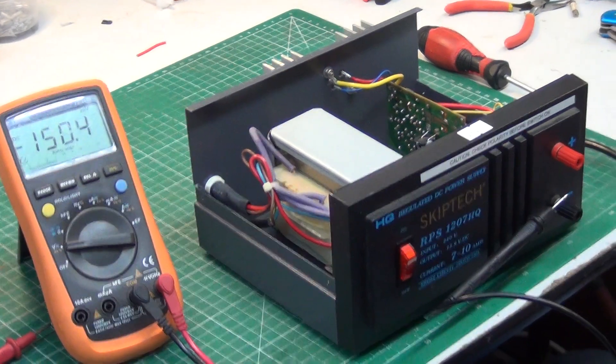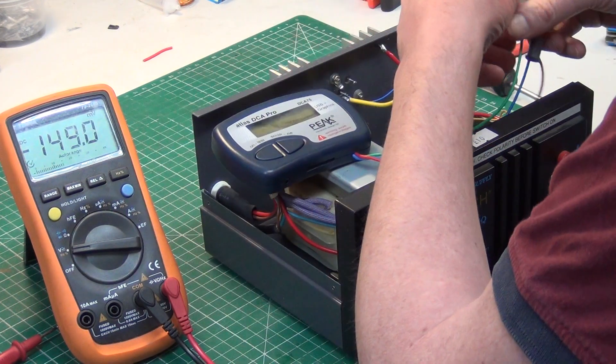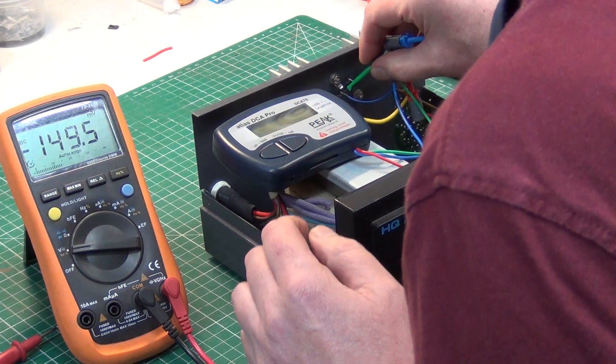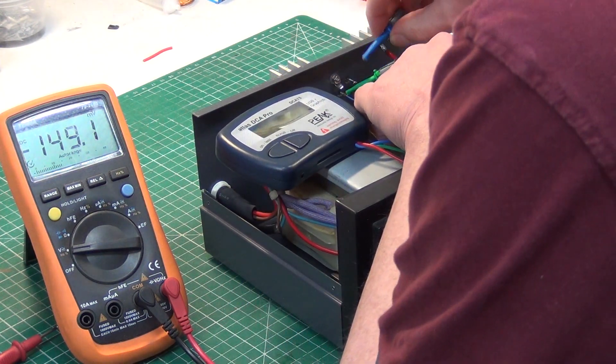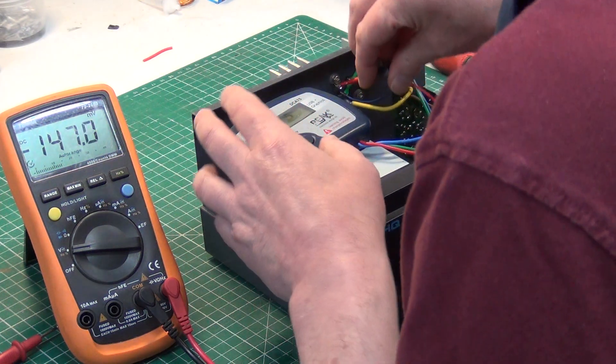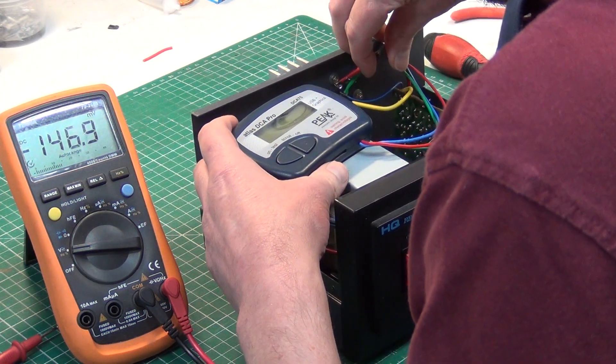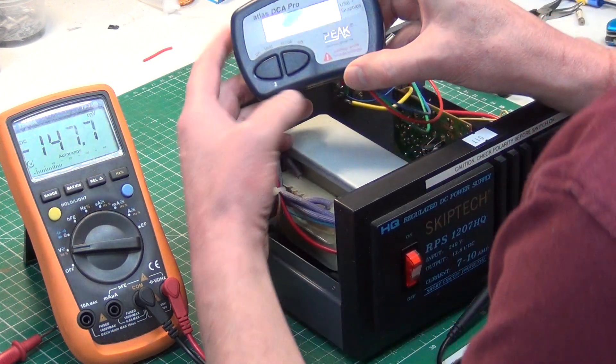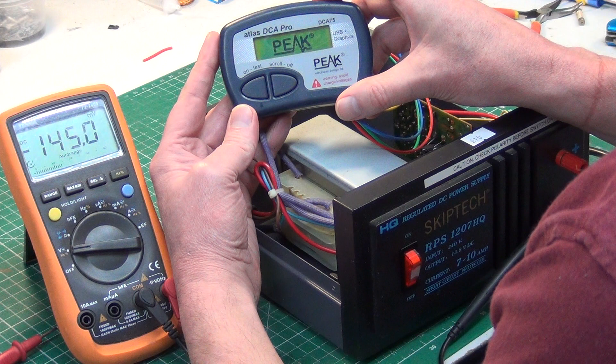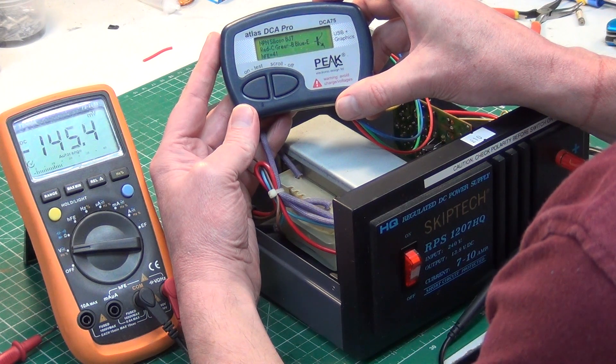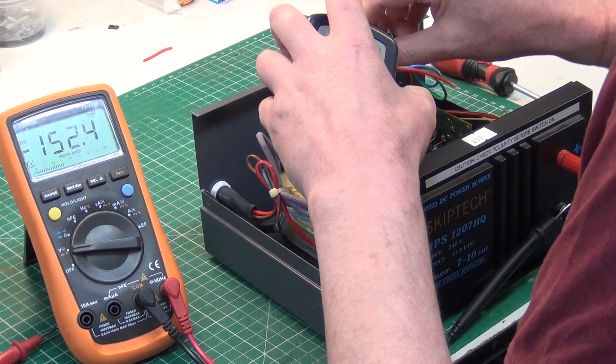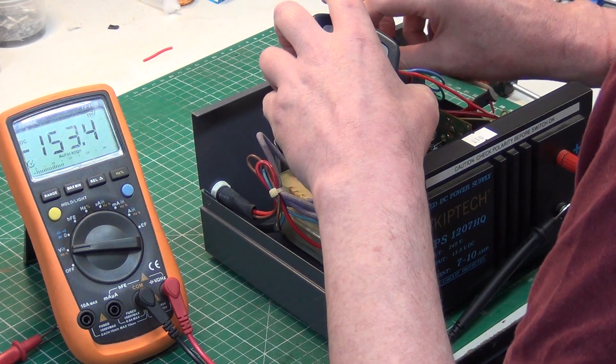Pause the video. Right, so Mr Chip has unsoldered the output transistor and we'll now put the transistor tester on and see what it says. It says it's a transistor. Good. So that's not the fault. We'll solder that back together then. Pause the camera.